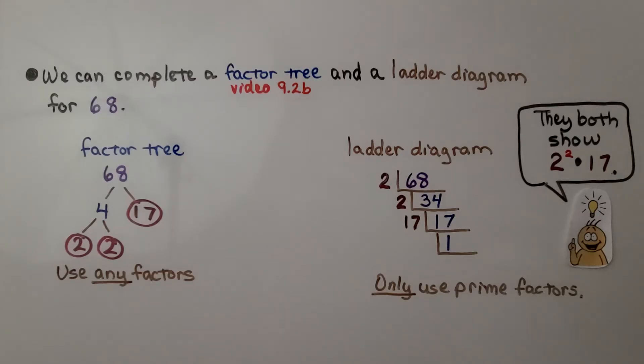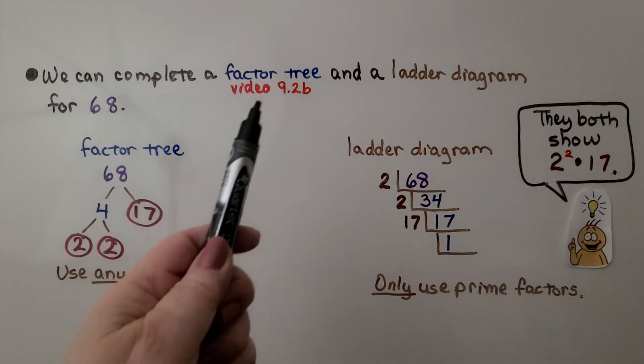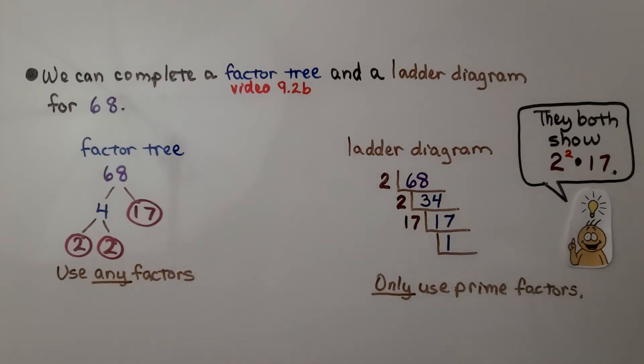We can complete a factor tree, which we learned how to do in video 9.2b, and a ladder diagram for 68. We think of 2 factors that will equal 68. 4 times 17. 17 is a prime number, so we're going to circle it. But 4 has the factors of 2 times 2. We have the factors 2 times 2 times 17.